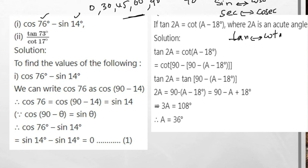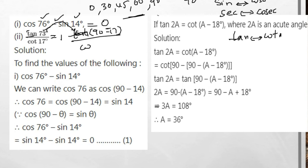In complementary angles, the angle changes. So cos 76° − sin 14° = 0, because every subtraction of complementary pairs equals 0. And tan 73°/cot 17° = 1, because the division of complementary angle pairs equals 1.